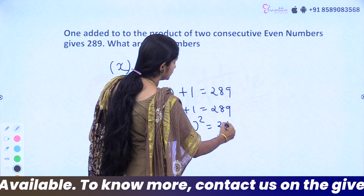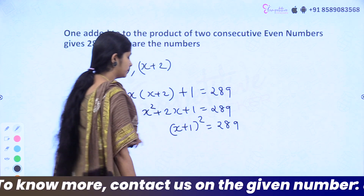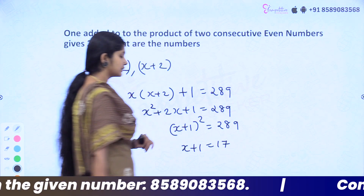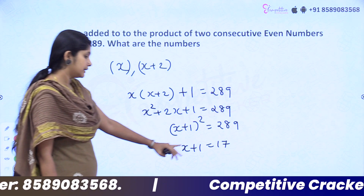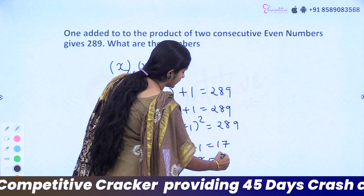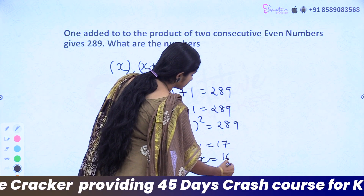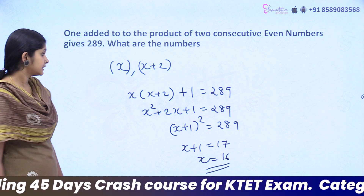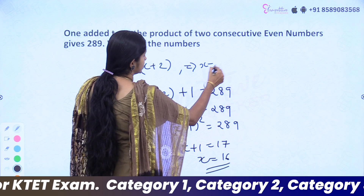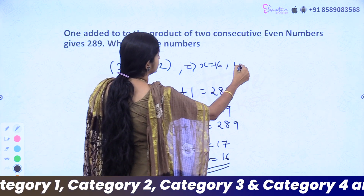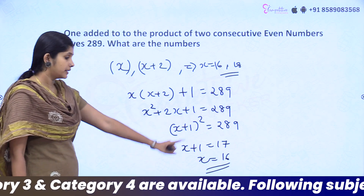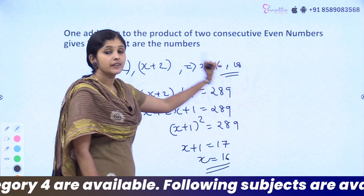Since (x plus 1) squared equals 289, and the square root of 289 is 17, we get x plus 1 equals 17, so x equals 16. The two consecutive even numbers are x equals 16 and x plus 2 equals 18.